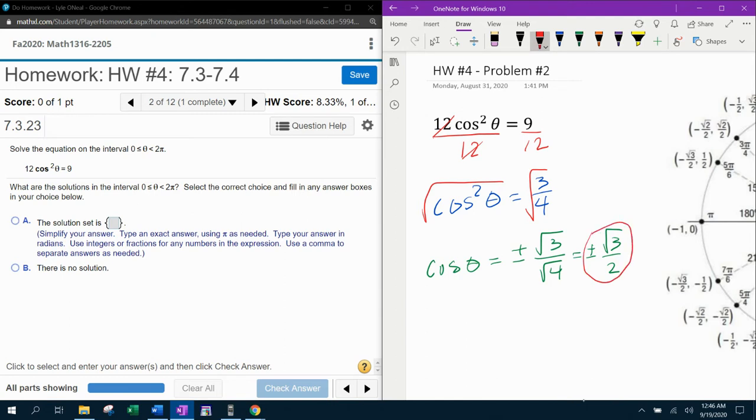And now what we can do that we have the trig function isolated is we can go to the unit circle and try to solve this equation. So here's what we're looking for. We're looking for all of the angles theta in the unit circle that have an x coordinate of either positive square root of three over two or negative square root of three over two.